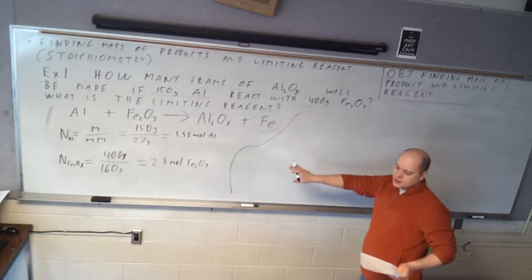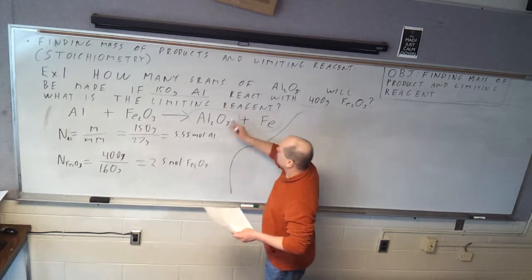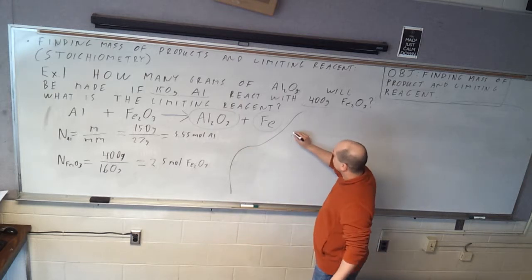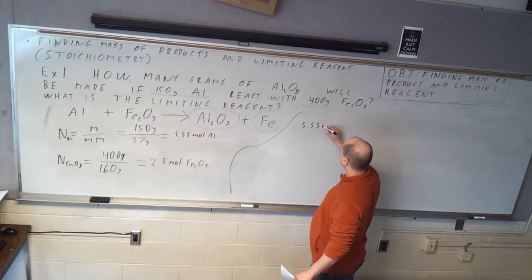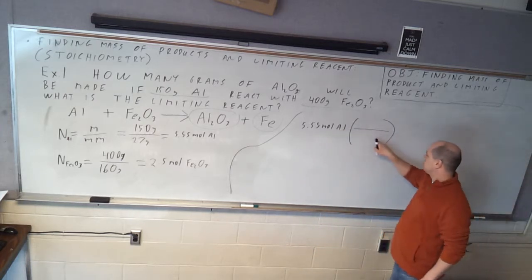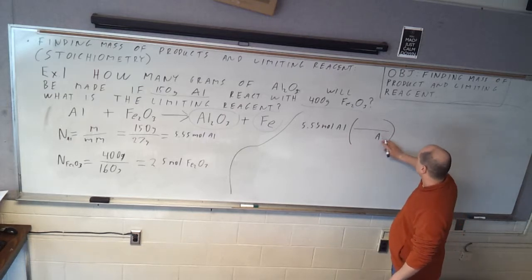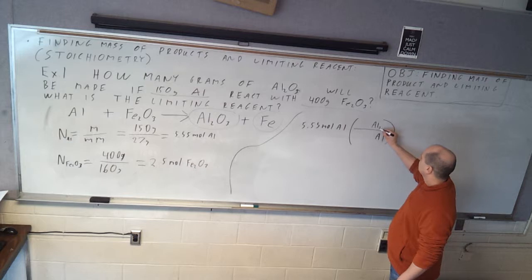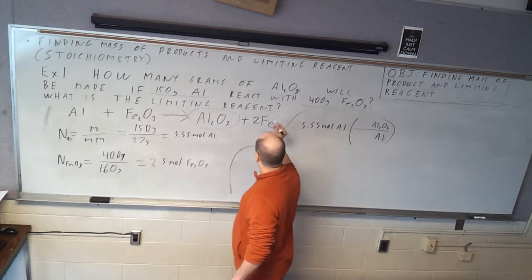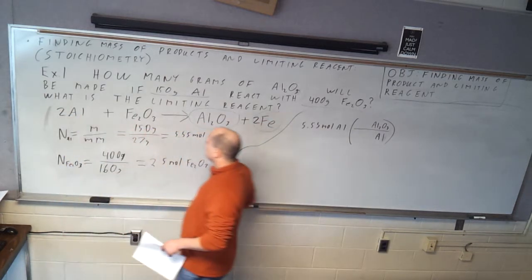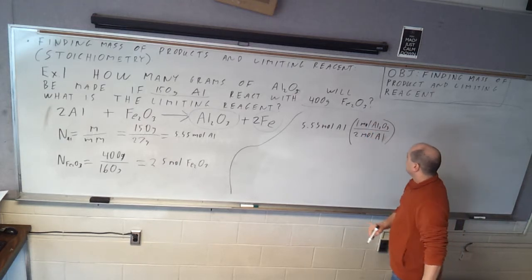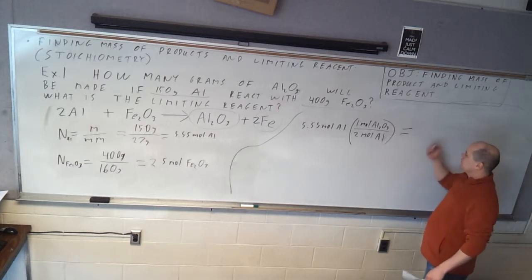So we have number of moles for both of these. Now we're going to find number of moles of product made, which is exactly what we did yesterday. So we'll do 5.55 moles of Al, and then whatever's out here always goes on the bottom. And what we're looking for is how much aluminum oxide is made, so that goes on top. Now we're just going to plug in numbers. I never balanced this thing. That's a 2 and that's a 2. So it's going to be 2 moles on the bottom and 1 mole on top.